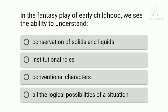Third question: in the fantasy play of early childhood, we see the ability to understand — Option A: all logical possibilities of a situation. Option B: institutional roles. Option C: conventional characters. Option D: conservation of solids and liquids. The correct answer is Option C, conventional characters. In fantasy play, children imagine a character and pretend to be that character — like becoming Superman or Batman — so the answer is conventional characters.